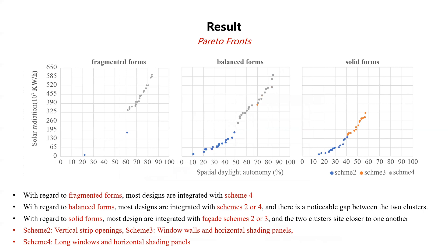Taking a closer look at the optimization results to see how facade scheme affects performance, we find that most fragmented form designs are integrated with facade scheme 4, which is a long window with a horizontal shading panel. For the balanced form, designs usually combine with scheme 4 and scheme 2, where scheme 2 is vertical strip windows. For the solid form, they were combined with scheme 2 and scheme 3. We can also notice that scheme 1 is not present in the Pareto front, meaning this facade scheme is not suitable for this design case.